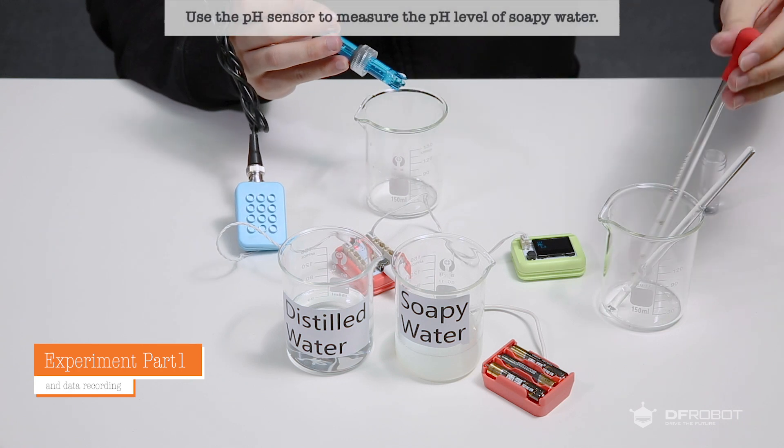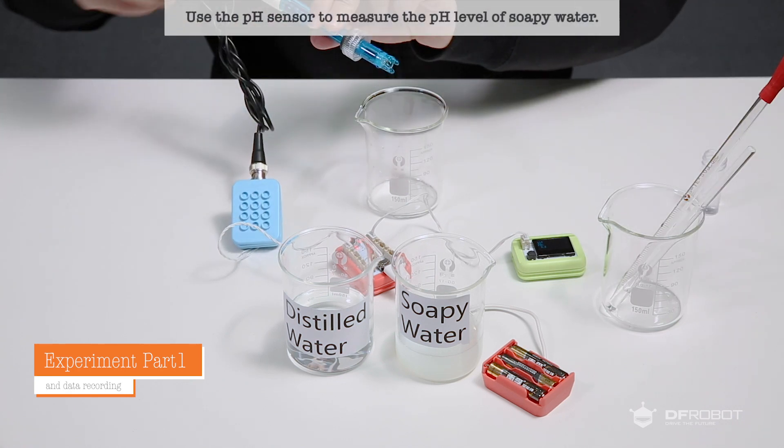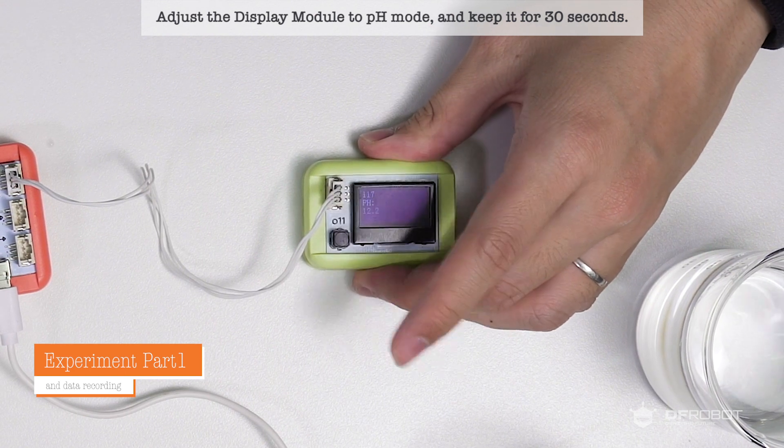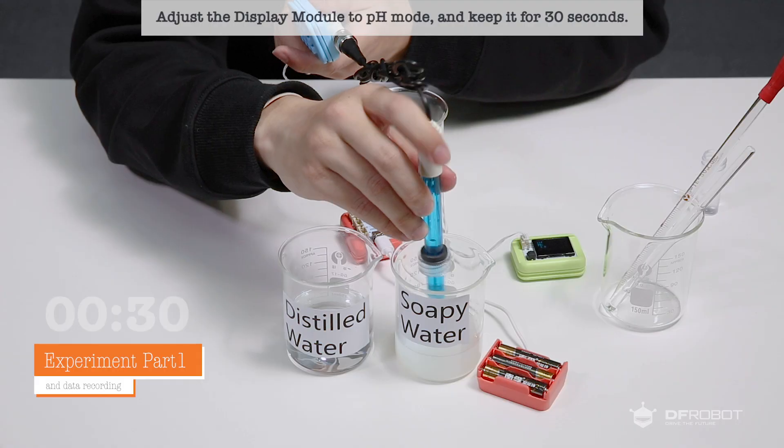Then we'll use the pH sensor to measure the pH level of soapy water. Adjust the display module to pH mode and keep it for 30 seconds.